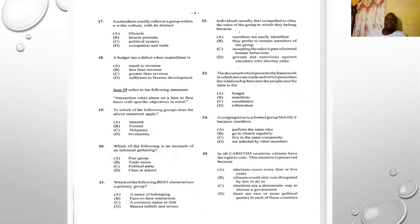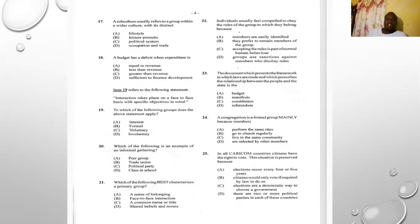Number eighteen: a budget has a deficit when expenditure — your expenses — is A) equal to revenue, B) less than revenue, C) greater than revenue, D) sufficient to finance development. The answer is C) greater than revenue. Whenever expenses are greater than the money the government is collecting as revenue, we have a deficit in the budget.